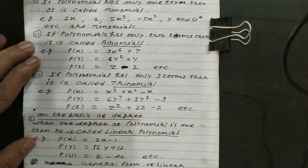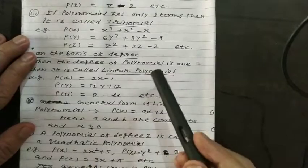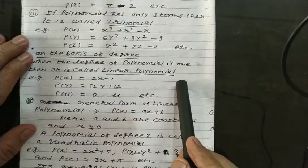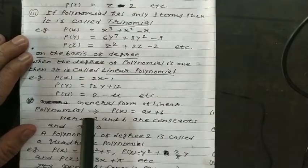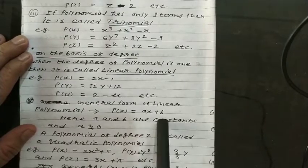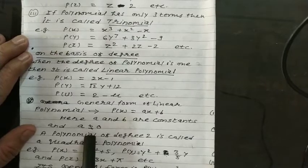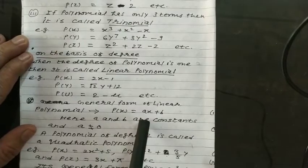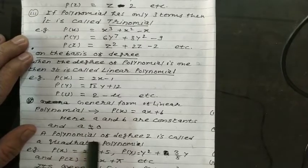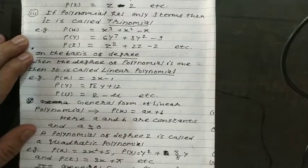Its general form: when we talk about the linear polynomial, it is expressed in general form as p(x) = ax + b. Here, a and b are constants, and a must not be equal to 0. a can be 1, 2, 3, 4, and so on. b may be 0, but the coefficient of x must not be 0.